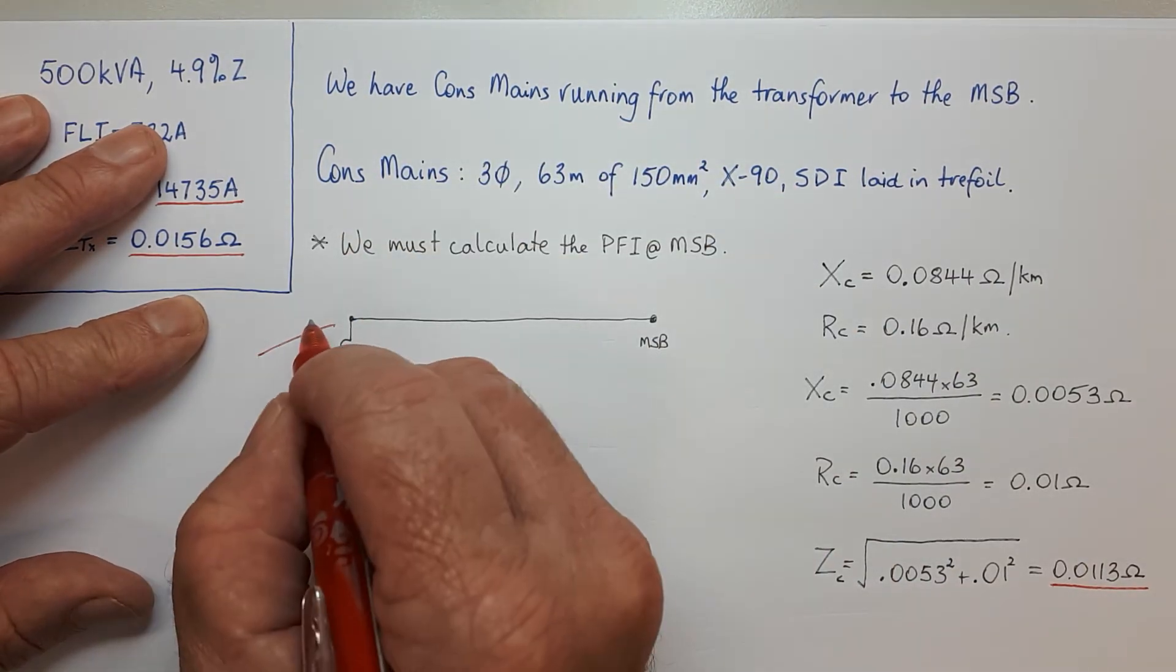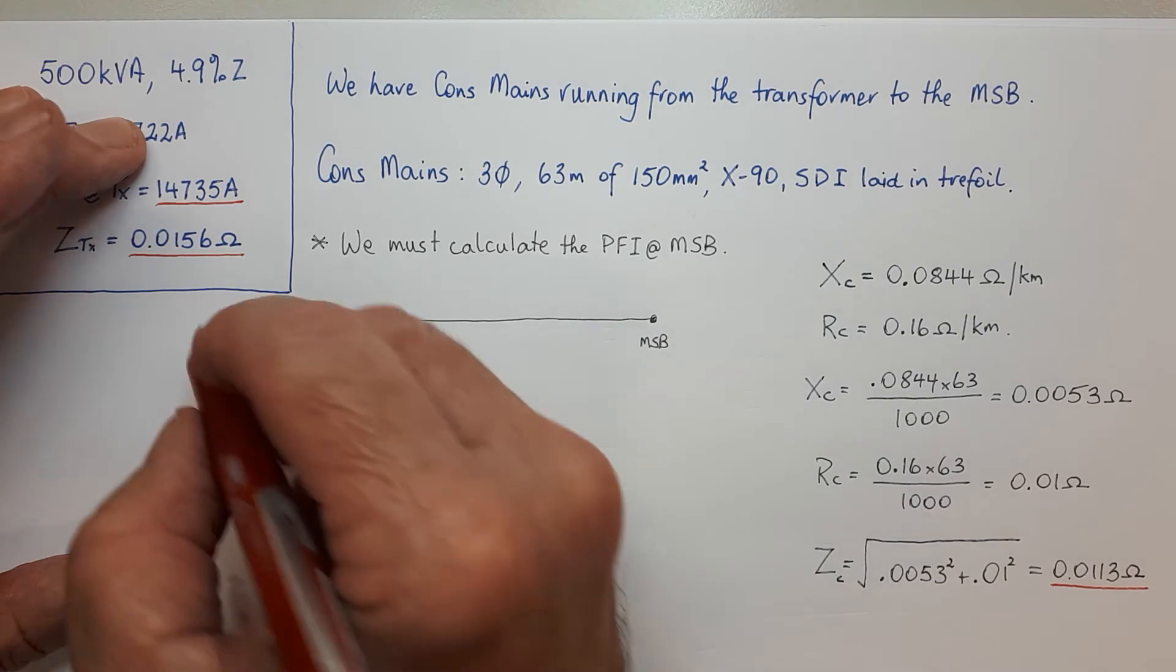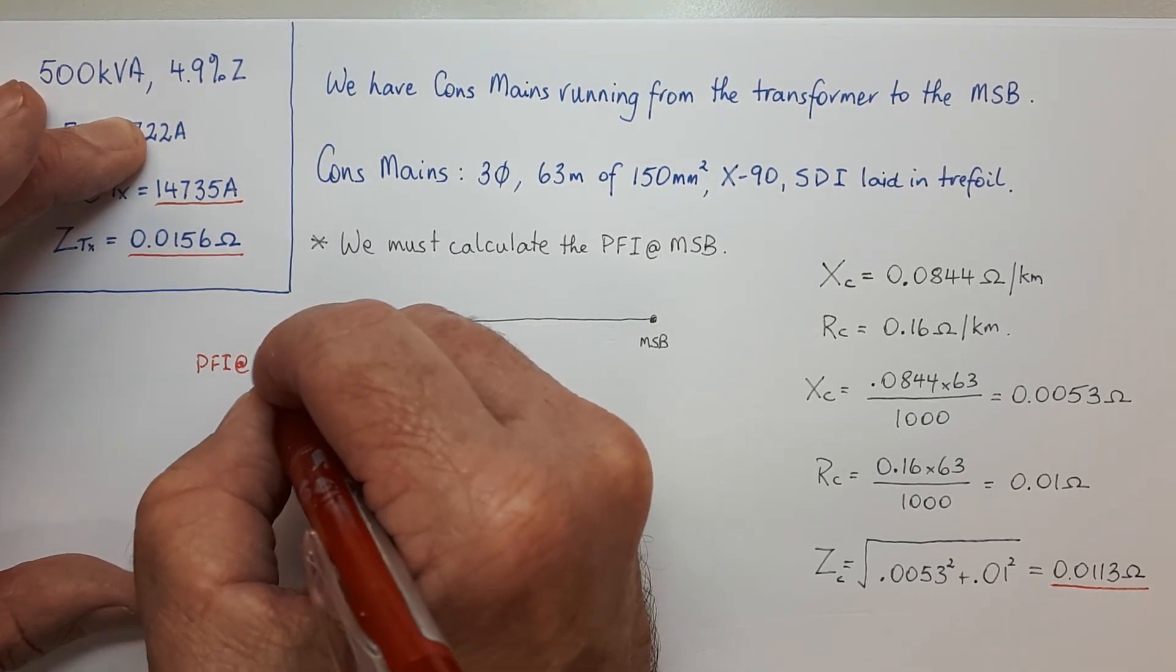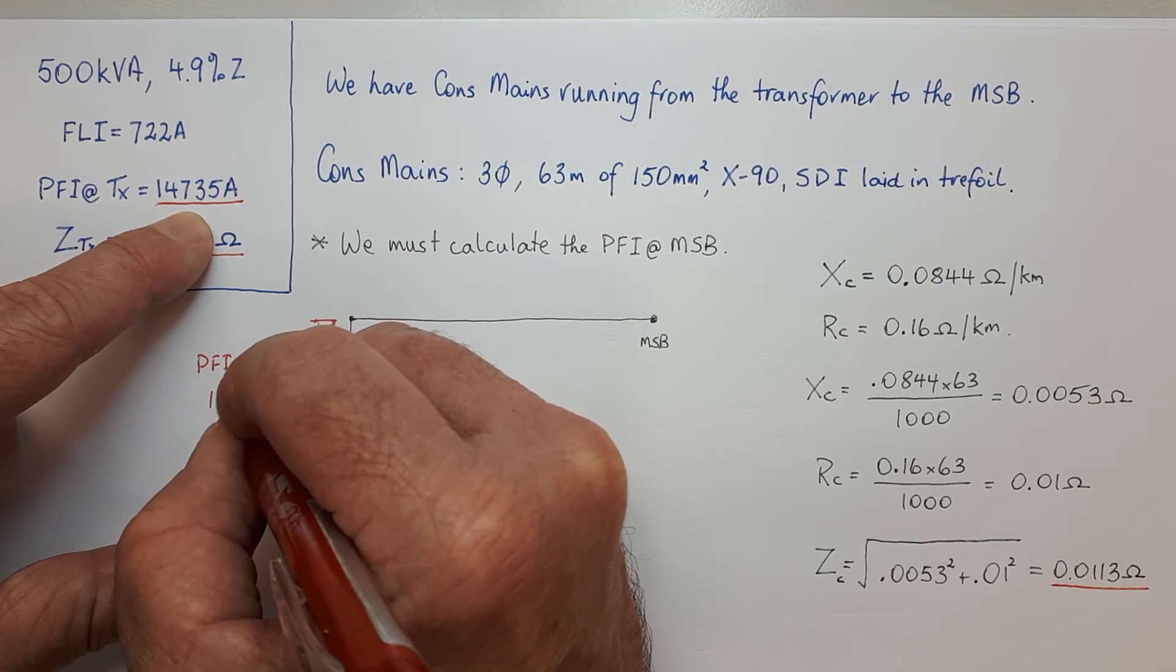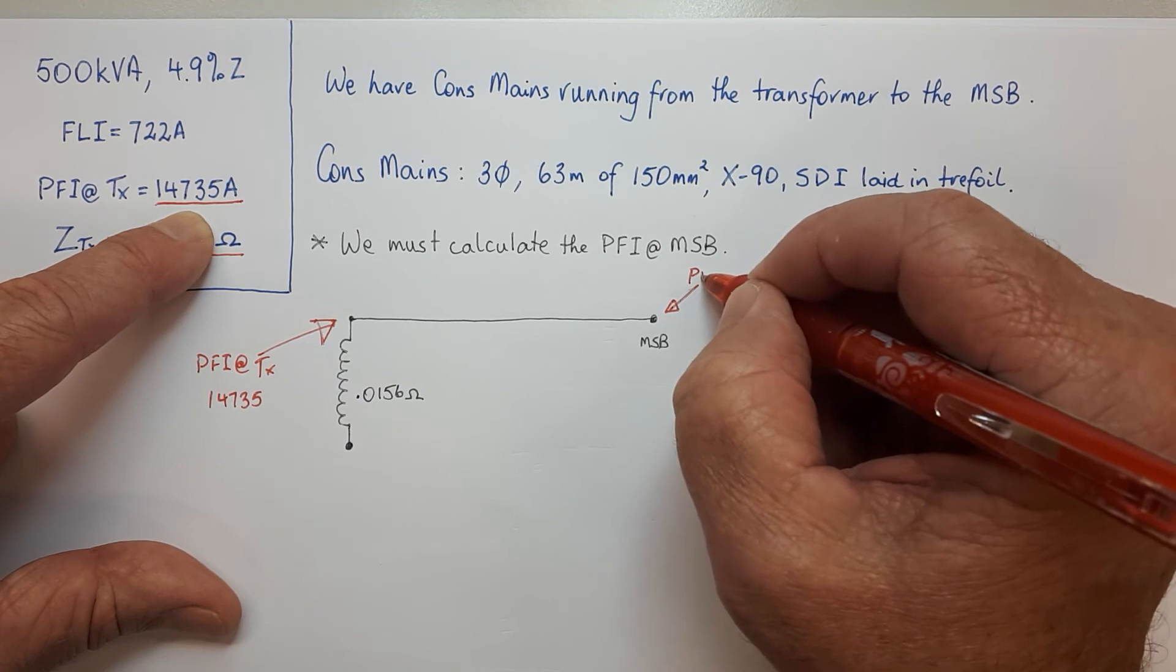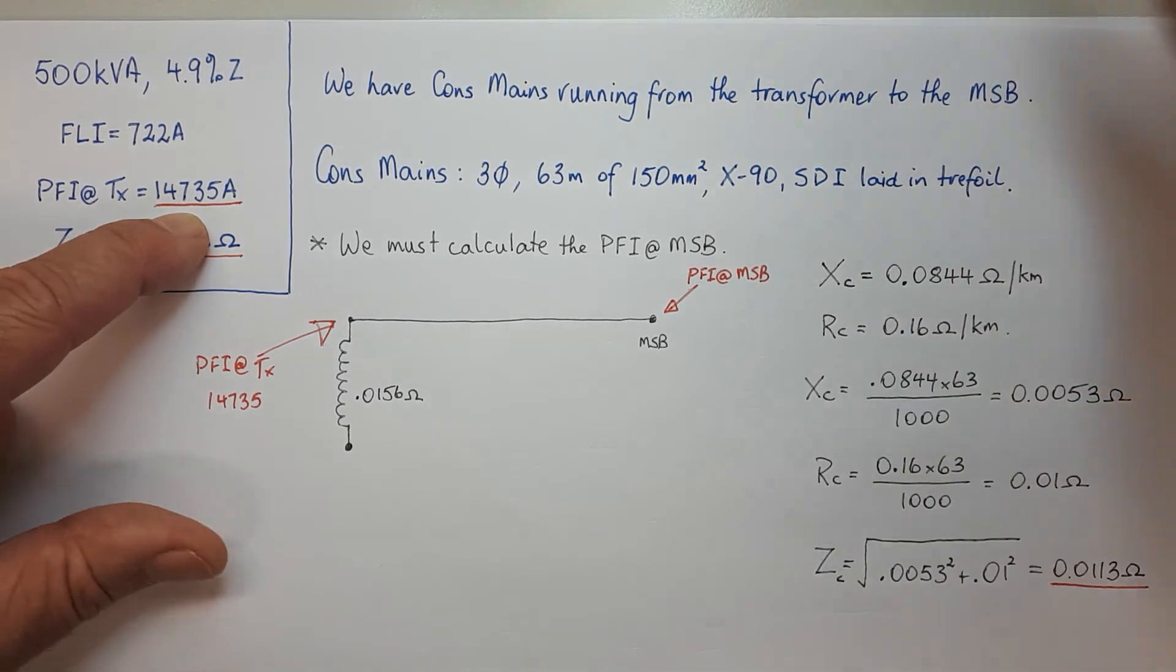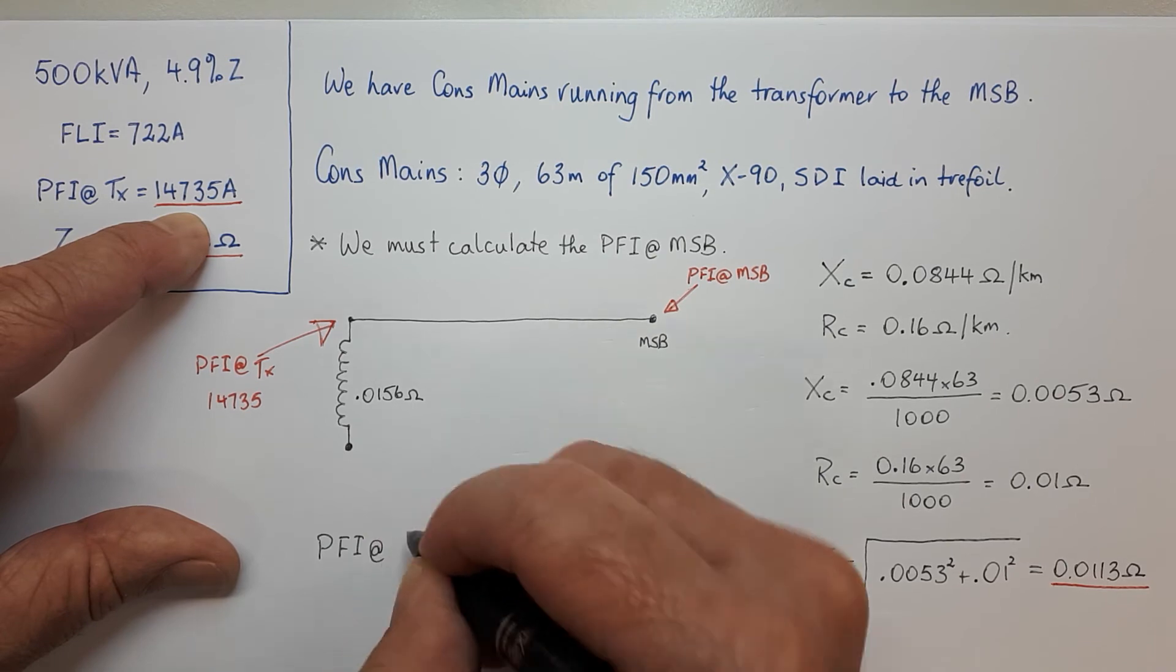We already know that the prospective fault current at the transformer, PFI there, is 14,735. We want the PFI at the main switchboard, and we're going to find it like this: PFI at the main switchboard equals 230 over a heap of stuff.